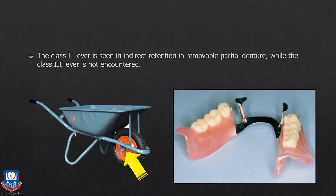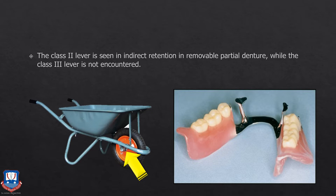The class 2 lever mechanism is seen in the indirect retainers of a removable partial denture. When the denture base is being lifted from the posterior region due to sticky food, the denture rotates in a vertical direction. The indirect retainers placed on anterior teeth, far away from the fulcrum line, display the class 2 lever reaction.